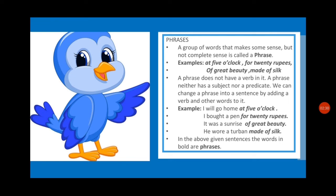Third: 'of great beauty' — we didn't know what is of great beauty. But adding words: 'It was a sunrise of great beauty' — now we get the complete idea. Fourth: 'made of silk' — what was made of silk we don't know. So: 'He wore a turban made of silk' — this has converted the phrase 'made of silk' into a complete sentence. In the above sentences, the words in bold are phrases.